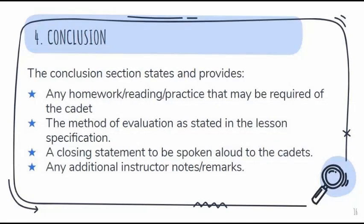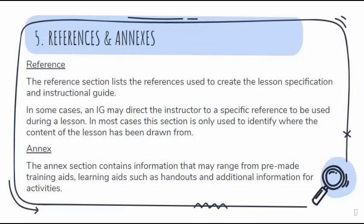The fourth part of the IG is the conclusion, which states and provides any homework, reading, or practice required after the lesson, the method of evaluation, a closing statement to be spoken aloud to the cadets by the instructor, and any additional instructor notes or remarks. The reference section lists any references used to create lesson specification and the instructional guide, showing where the original content is located. The annexes section is where you can find any pre-made training aids or learning aids for the cadets, such as handouts or additional information for activities.